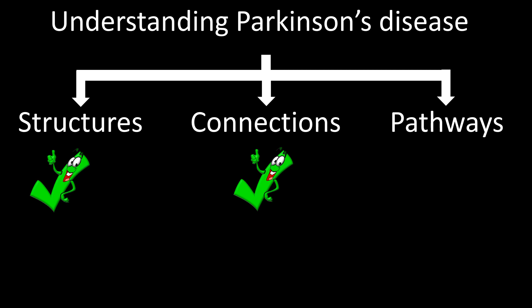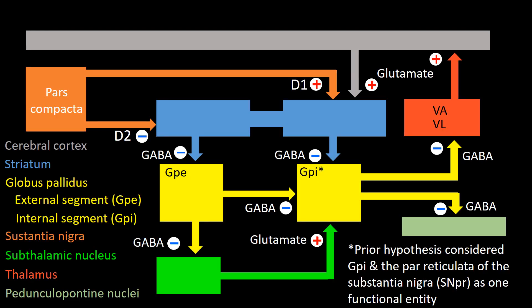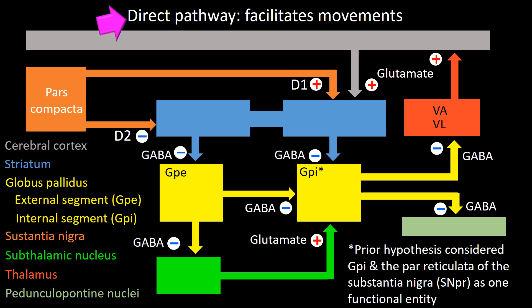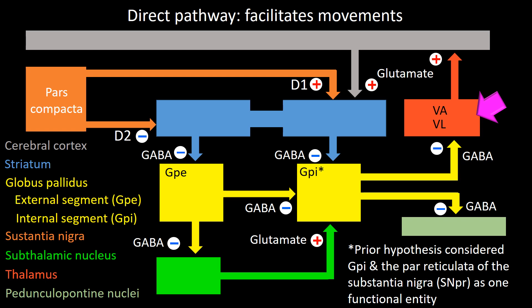We have finished talking about connections; now we will talk about pathways. There are two pathways: the direct and indirect. It is the balance between these pathways that produces smooth movements. The direct pathway facilitates movements. It goes from the substantia nigra pars compacta to the striatum, from the striatum to the internal segment of the globus pallidus, from there to the thalamus, and from the thalamus to the cortex.